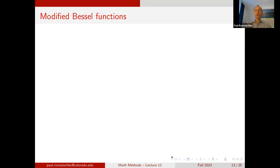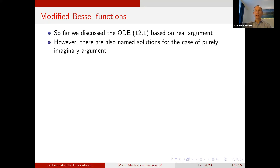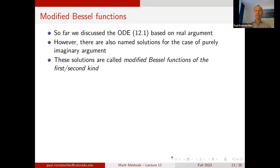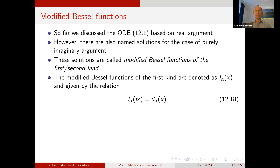Let me now discuss the modified Bessel functions. So far we discussed the ODE in equation 12.1 with real argument x; however, we can also consider purely imaginary x. The corresponding solutions are called modified Bessel functions, using the same nomenclature: modified Bessel functions of the first kind, second kind, and so on. Since J_α(z) is analytic in the complex plane, we have J_α(ix) = i^α I_α(x), where I_α(x) is the modified Bessel function of the first kind.